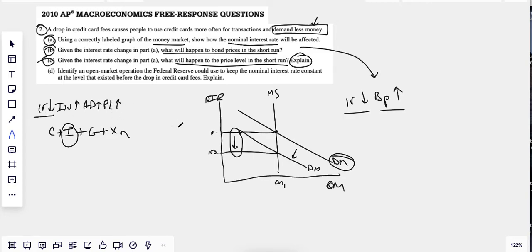That makes aggregate demand go up, that makes the price level go up. Now if we were going to finish this all the way out, and I tend to always do this, it's a lovely sort of cause and effect relationship here. Interest rates go down, investment goes up, aggregate demand goes up, price level goes up. I always write real GDP goes up and output goes up and unemployment goes down.